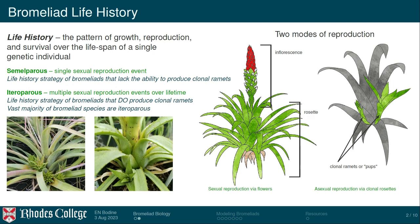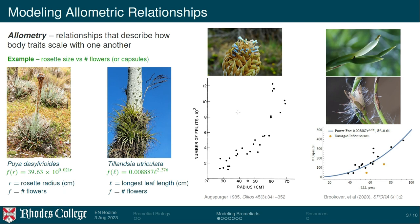Now I want to talk about the models. We'll start with very basic simple models and ramp up to more complicated ones. The first set are built with continuous functions and simulate allometric relationships — describing how different body traits scale with one another. The example here is the size of the rosette and how it scales with the number of flowers on the inflorescence. Two examples: Puya dasyliryoides and Tillandsia utriculata, which is native to Florida. For the Puya, rosette size is measured as radius, plotted against number of flowers.